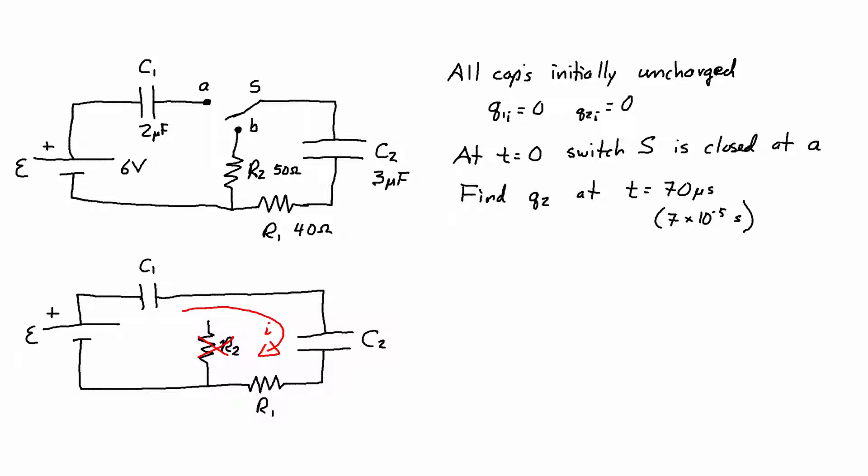We essentially have a circuit where C1, C2, R1 and the EMF are all in series. Now the capacitors are initially uncharged, which means that C2 and C1 are both going to charge. And this helps us choose which function to use.